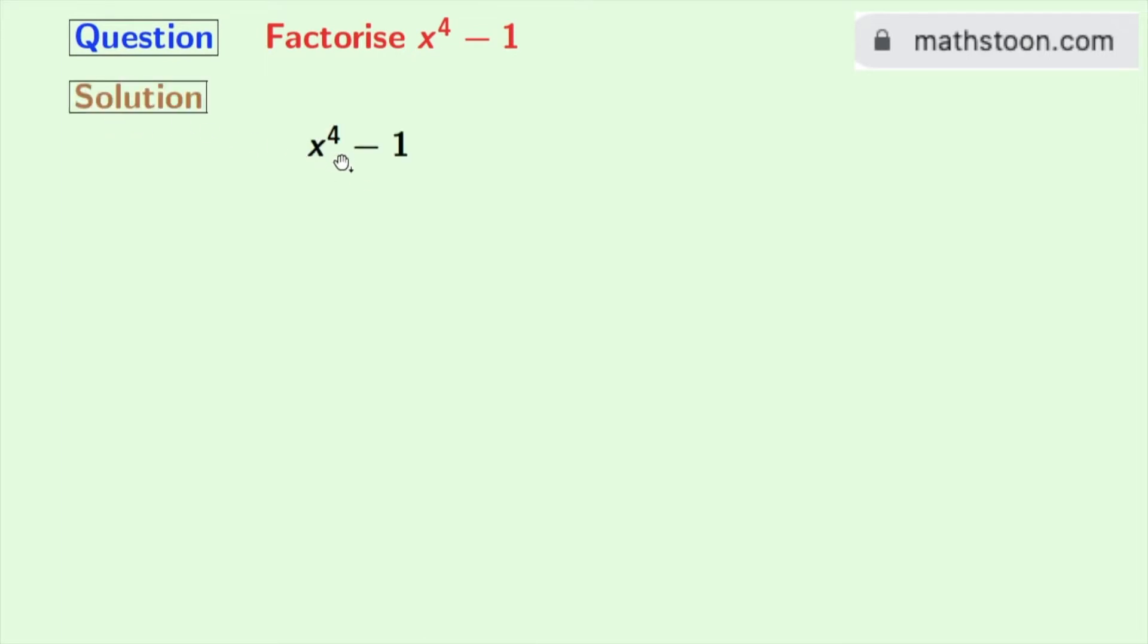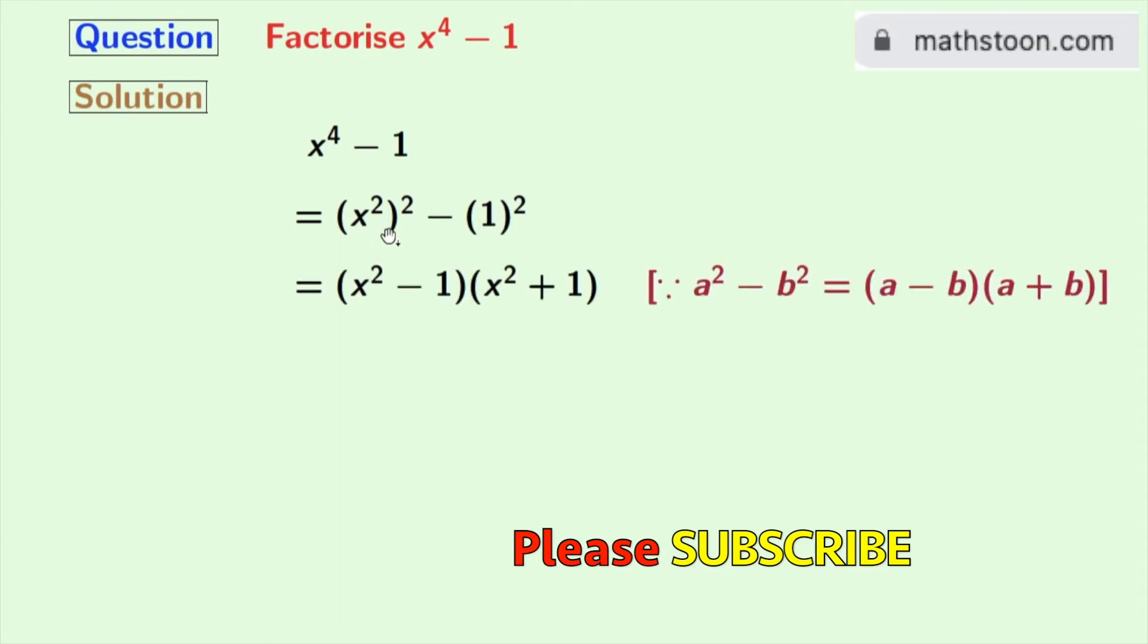Our given expression is x power 4 minus 1. Now we will write x power 4 as x square whole square and 1 as 1 whole square. Look that here we can apply the formula of a square minus b square, where a is x square and b is 1.